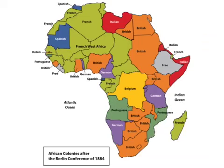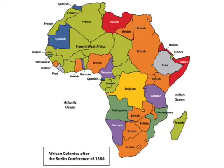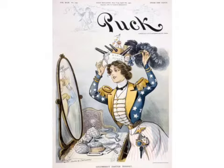While we were focused domestically, other nations were beginning to scramble for colonies. After the Berlin Conference of 1884, Africa was divided up among the major European powers, and the same thing was happening in Asia and other parts of the world. Other nations were picking up colonies, and we were a little late to the game. But we'd catch up pretty quickly and have our own empire by 1900.